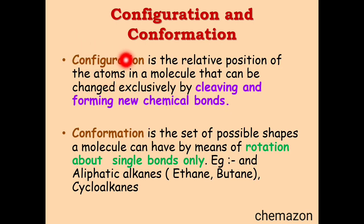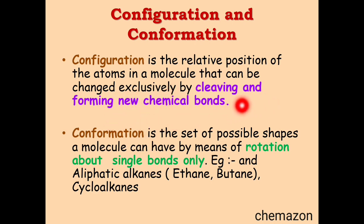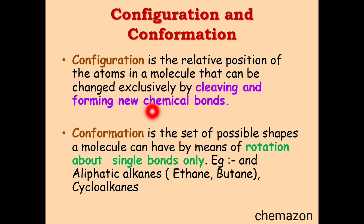Another very important topic is the difference between configuration and conformation. Configuration is the relative position of atoms in a molecule that can be changed exclusively by cleaving and forming new chemical bonds. We had already learned about R and S configuration. To convert an R configuration molecule into an S configuration molecule, you have to cleave or break the bond — only then can you form the S configuration. So to go from one configuration to another, you must necessarily break the bonds.